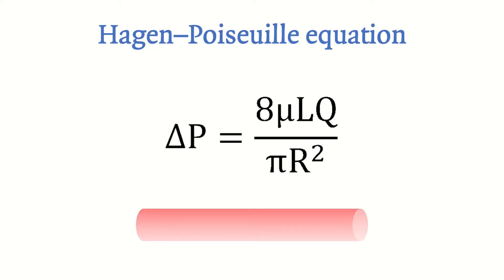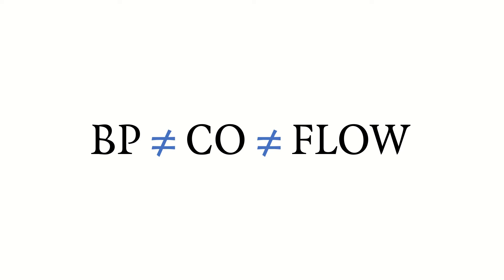Talking about flow: going back to basic physics, linear flow in a tube has an equation correlating pressure and flow. The pressure is delta P and the flow is Q, but the relationship is not linear at all — many factors play a role: L is the length of the tube, R is the radius, and there is the viscosity of the medium. So blood pressure does not equal cardiac output and does not equal flow. Those are three different concepts.